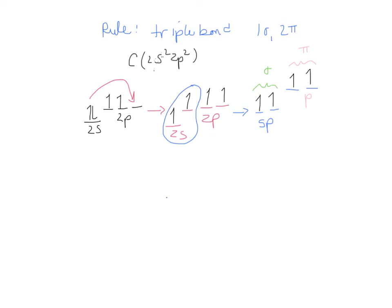Go back and draw the sigma framework, which is this. And then focus on the P's. You have each carbon having one P orbital. Maybe you would call this the PY orbital. So each carbon would have a PY electron or a PY orbital. And then there's going to be a sideways overlap between them to form the pi bond.